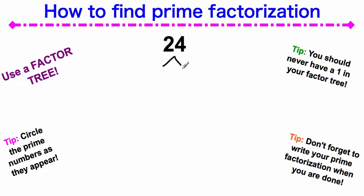It's pretty simple. We have to think, what times what equals 24? We can choose any number pair that equals 24, so I'm going to do 12 times 2. I'm going to keep going down in my factor tree until I get prime numbers.